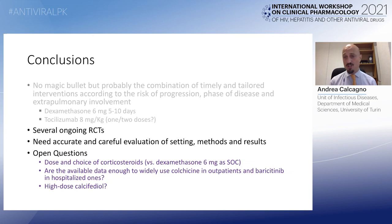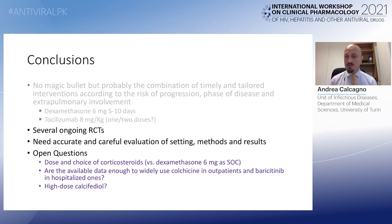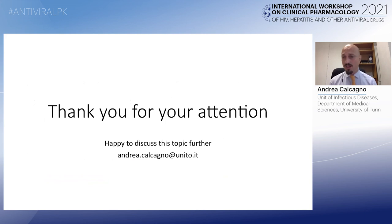There remain a lot of open questions: Are we sure dexamethasone 6 mg is right for every patient? Should we consider weight-based dosing? What about CNS involvement? Is there enough data to widely use colchicine and baricitinib in hospitalized patients? What about high-dose calcifediol? These are questions we need to address in the coming months. Thank you for your attention — I'm happy to discuss further, and you can contact me by email.